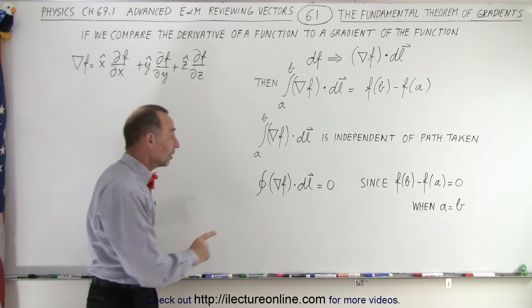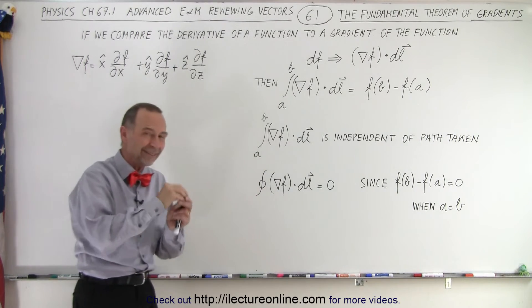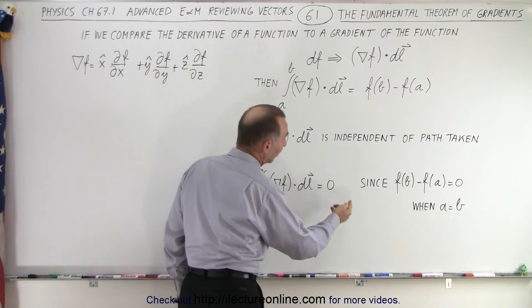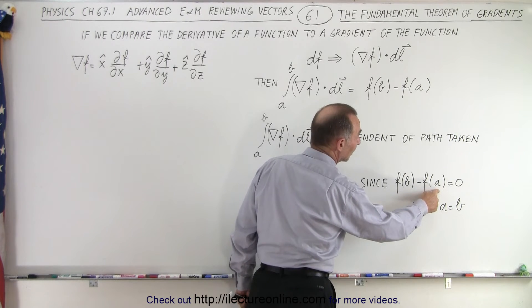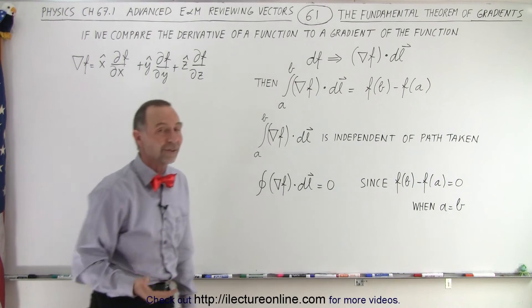Now, it also turns out if we integrate along a closed path so that we end up in the same place that we started, that will be equal to zero since the function evaluated at B minus the function evaluated at A, well, since A and B are equal to each other, the difference should therefore be zero.